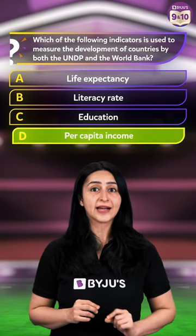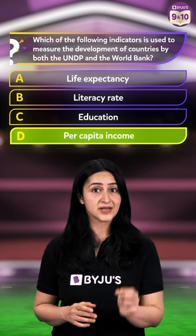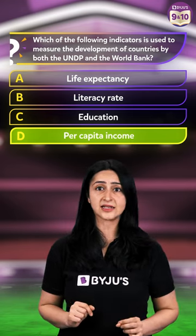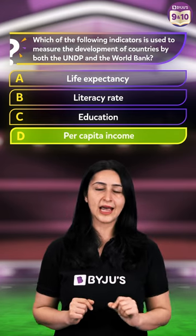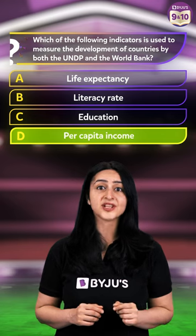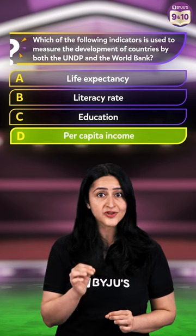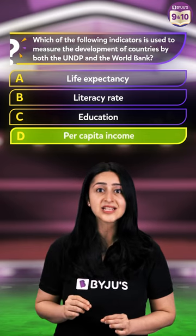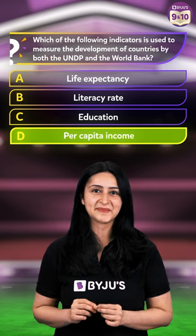The correct answer is per capita income. The UNDP classifies countries based on the Human Development Index which has three indicators: life expectancy, education, and per capita income. Whereas the World Bank classifies countries based on per capita income into four categories: low income countries, lower middle income countries, higher middle income countries, and high income countries.